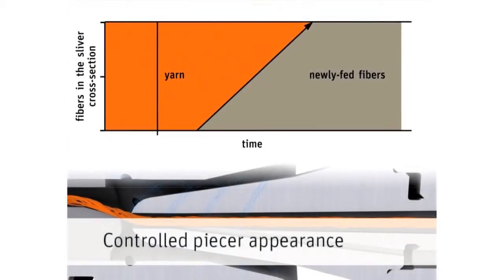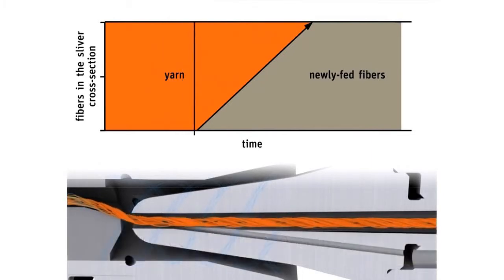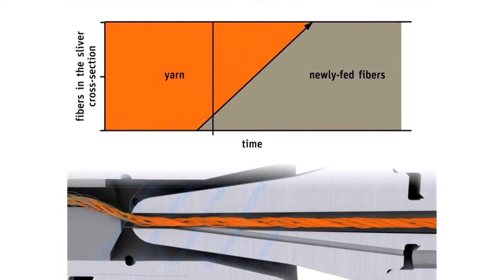To arrange the yarn-like appearance of the piecer, the feeding of the new fibers is progressive, increasing the total number of fibers in the cross-section gradually.